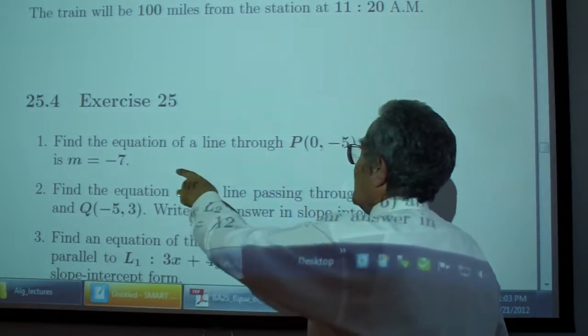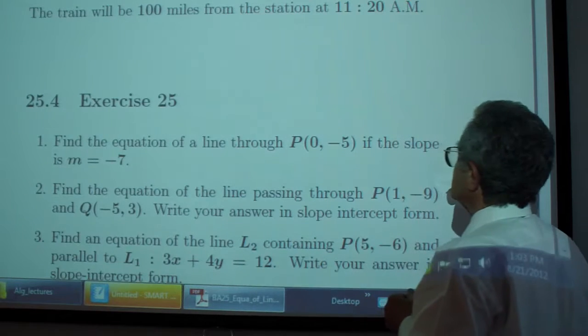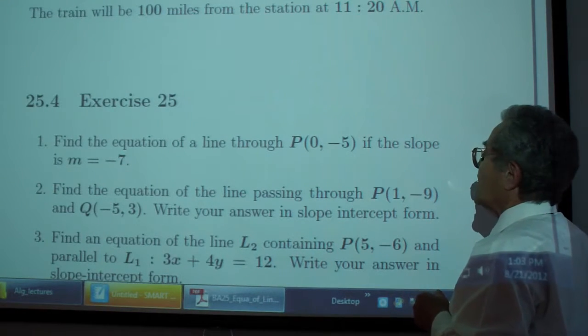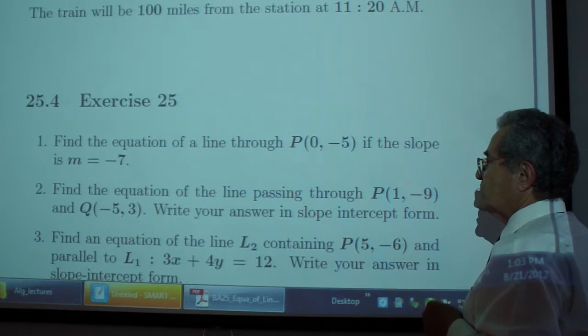Exercises. Find the equation of a line through the point (0, -5) if the slope is m = -7.